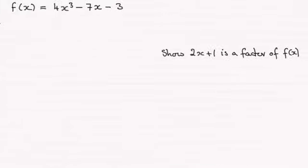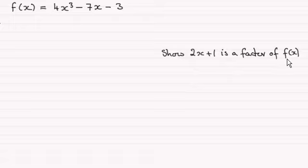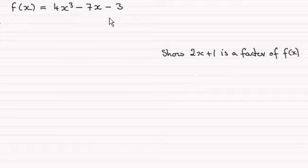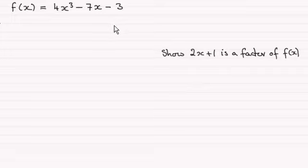For this question we're asked to show that 2x plus 1 is a factor of f(x), where f(x) equals 4x cubed minus 7x minus 3, and then go on to factorize this expression. There are two ways we could do this: one is by the factor theorem and the other is by algebraic long division. I'll show you both methods.